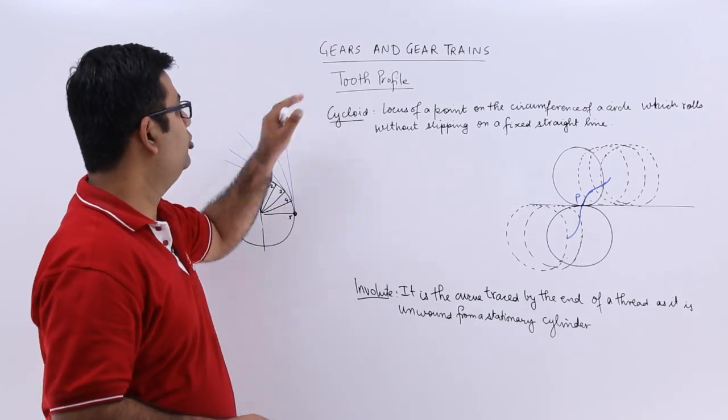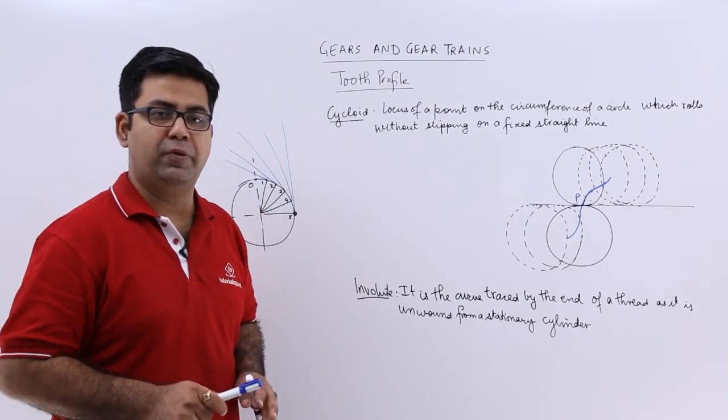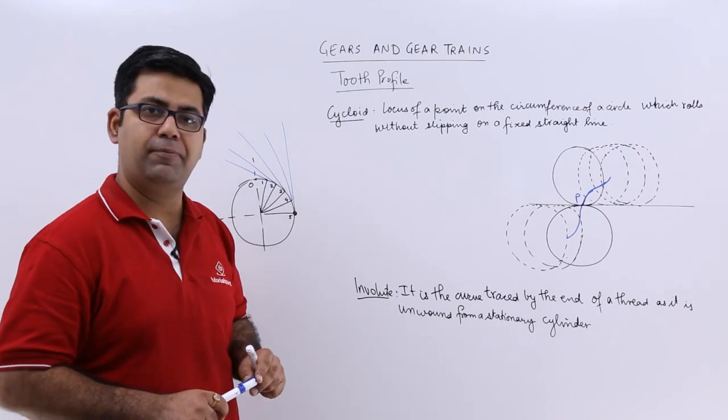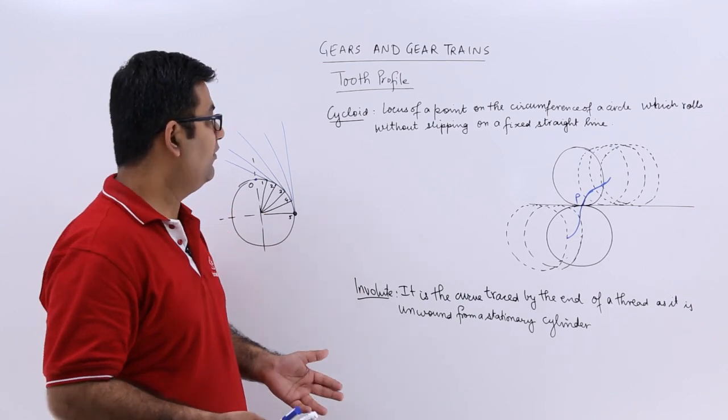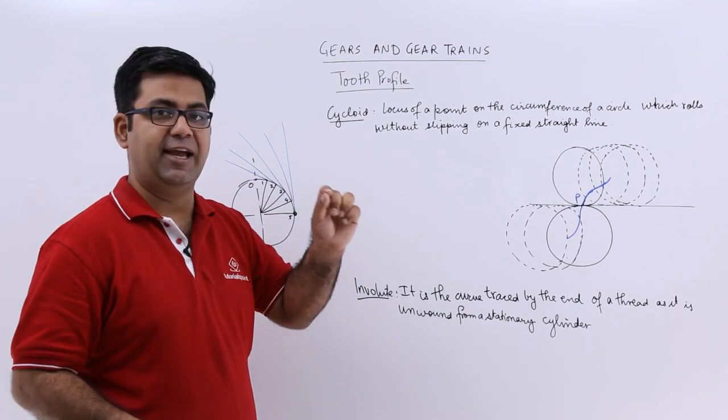Now let's talk about the tooth profiles. There are two tooth profiles. You can have a cycloidal profile or a cycloid profile and you can have an involute profile. Now we will first of all talk about the cycloid.